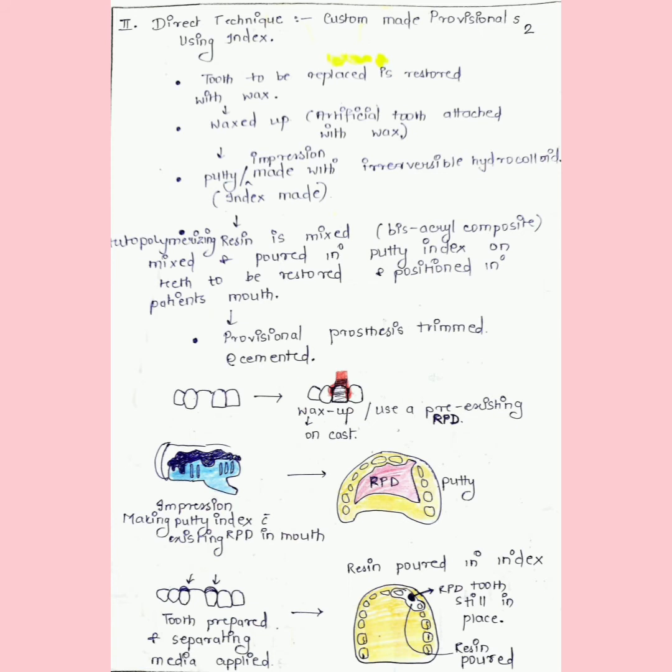We make an impression with hydrocolloid irreversible or alginate, and the index is made. We get a putty and an impression of all teeth including the missing, because we have placed that artificial tooth on that missing place. Now we pour in it the auto-polymerizing resin, bisacryl composite, in the putty index on the teeth to be replaced and position in the patient's mouth. We remove this after it polymerizes, then we get a provisional prosthesis which is trimmed and cemented.